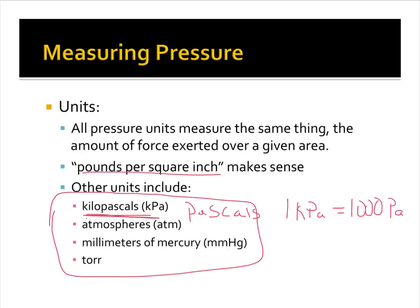We also have atmospheres. One atmosphere would be right next to the ocean at sea level. We also have what's called millimeters mercury, or torr. These two are similar — they're the exact same thing, just different names. I'll show you where we come up with that in a second.